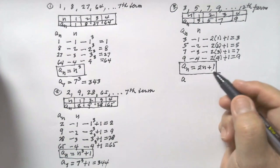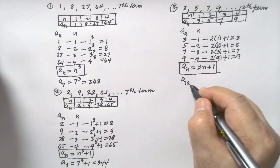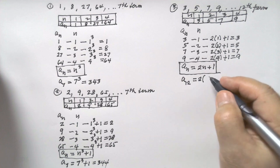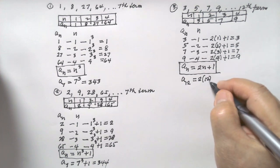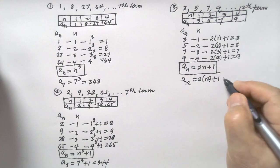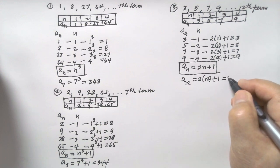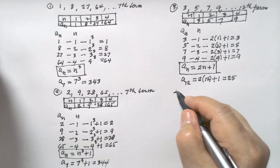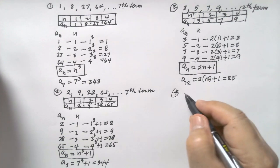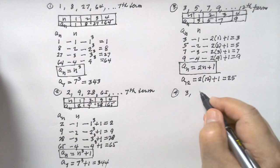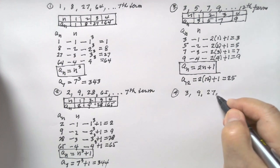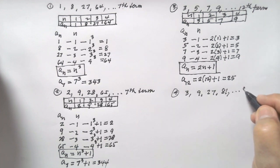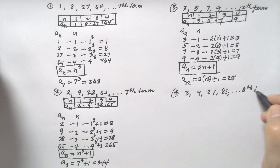So, a sub 12 equals 2 times 12 plus 1, which equals 25. Number four: the sequence is 3, 9, 27, 81, and we are asked to solve for the eighth term.